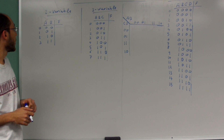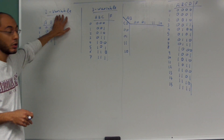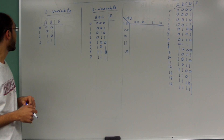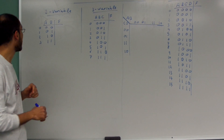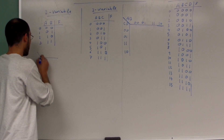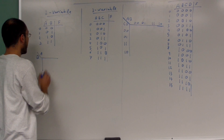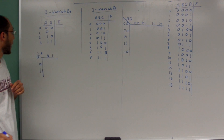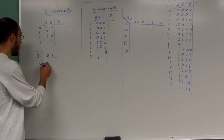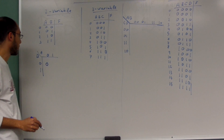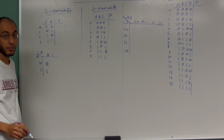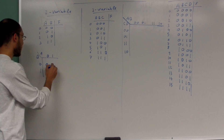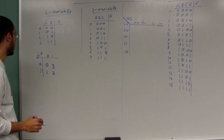If you have a two variable k-map, that means a truth table with two input columns and one output column. The k-map consists basically of a square, with A and B labeled, and values zero, one on each axis. You fill in the first row here, the second row here, and the third row here.